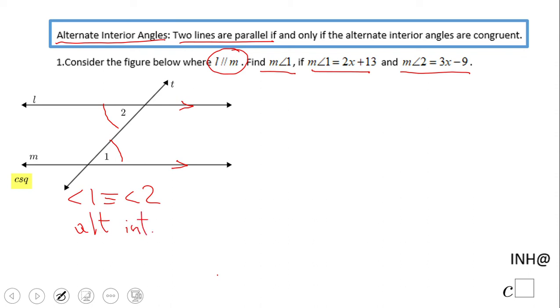That's what it says here. So basically now we know that the angles are congruent, they have the same measure. So we have the equation 2x plus 13 equals 3x minus 9, which we're going to solve.